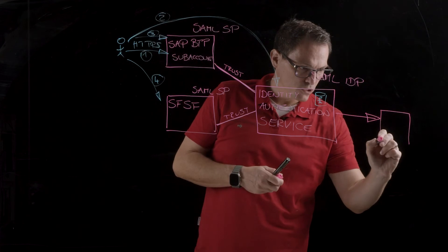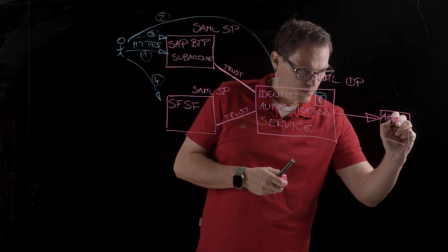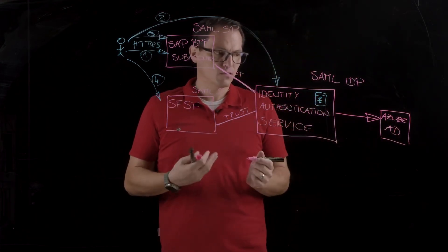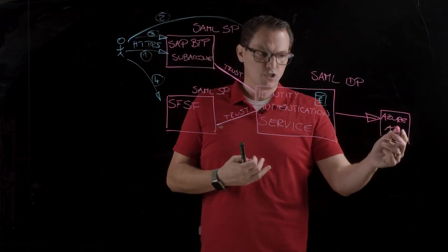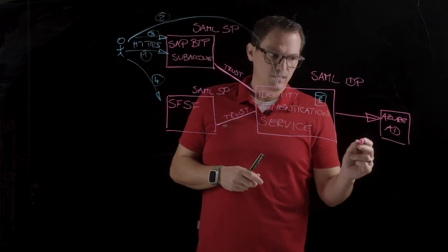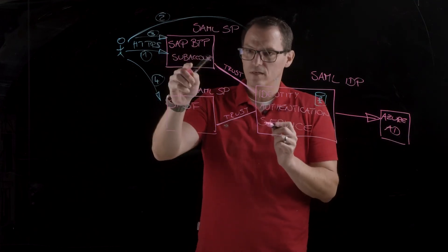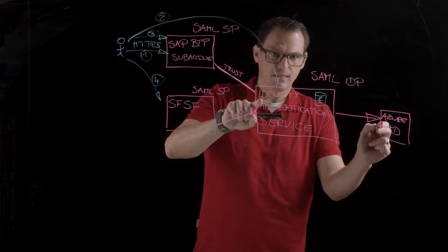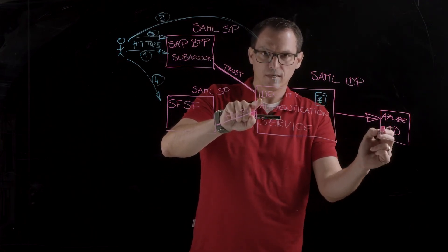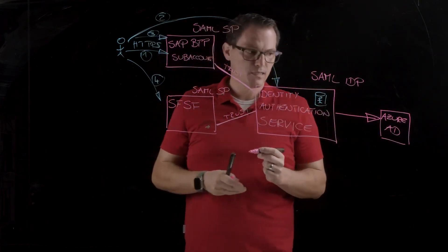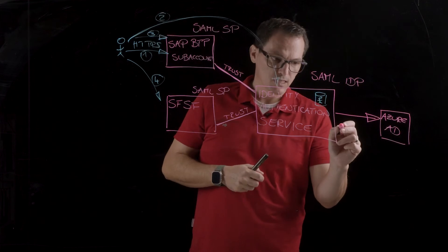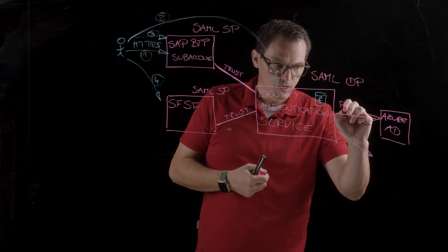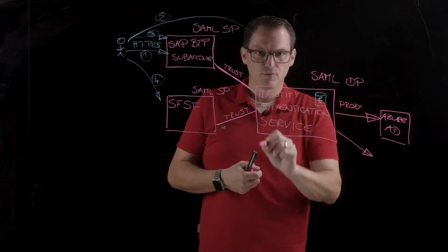So, coming from Microsoft, this is something we see quite often in the real world, in customer scenarios. So, they use Azure Active Directory, but you can delegate the authentication. So, you try to authenticate here. You are redirected to the IAS. The IAS redirects you to Azure Active Directory. There you are authenticated and everything is going back here, and you can then access the different SAP systems.